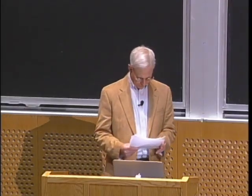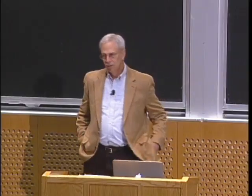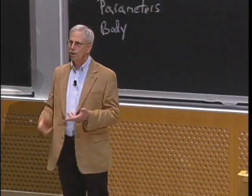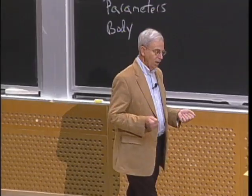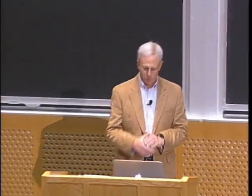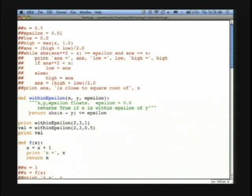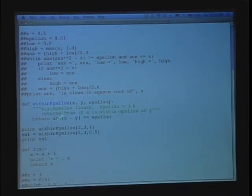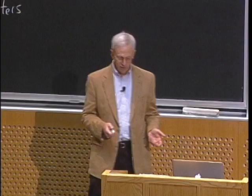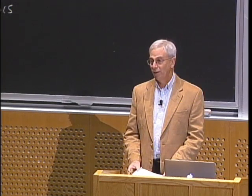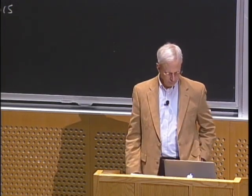Once I've written this code, I can call within_epsilon anywhere I want without duplicating code — I only write it once. Even though the body is short, I'm still gaining something: when I look at the code, it's easy to read. I'm printing 'within_epsilon(2, 3, 1)' — I don't have to decode what that's doing. If you choose function names properly, code that uses the function is much easier to read, and that can be a big value.